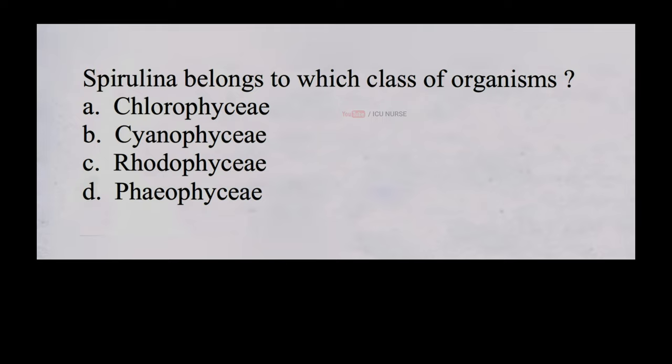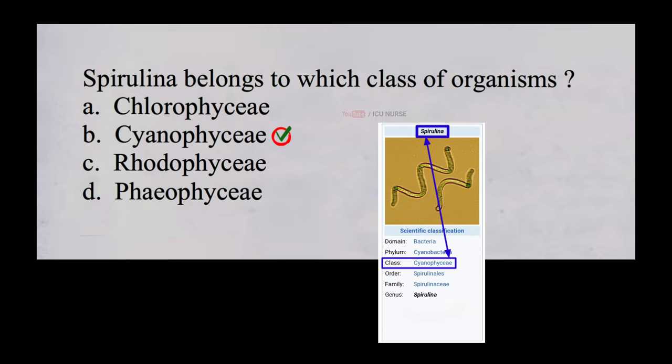Spirulina belongs to which class of organisms? A. Chlorophyceae, B. Cyanophyceae, C. Rhodophyceae, D. Phaeophyceae. And the correct answer is B, Cyanophyceae. Spirulina belongs to Cyanophyceae class of organisms.